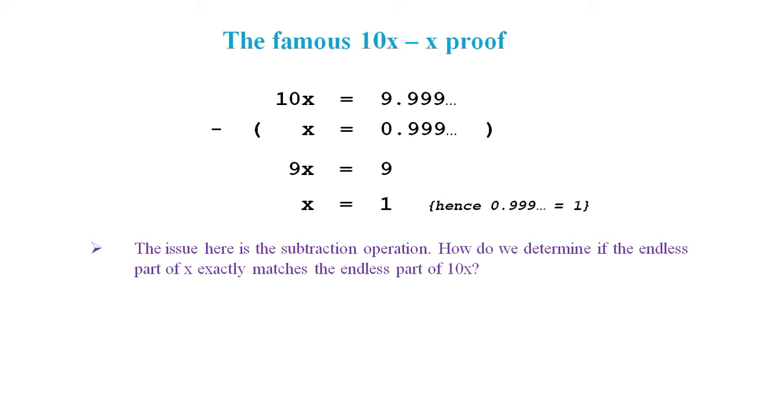The issue here is the subtraction operation. How do we determine if the endless part of x exactly matches the endless part of 10x? Now it appears obvious that the trailing parts cancel out, but this is what we call an informal proof. In order to be absolutely sure, we need to do this with mathematical rigor.